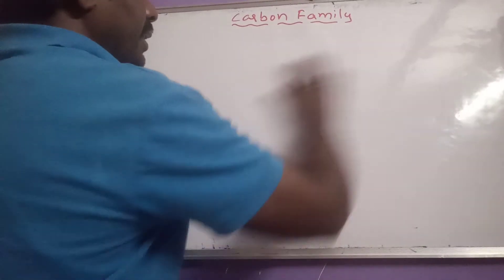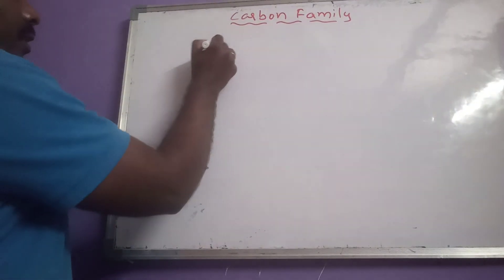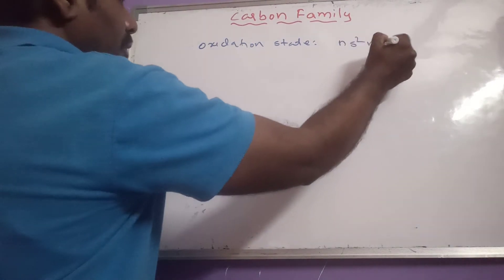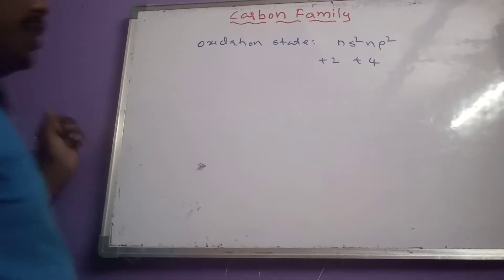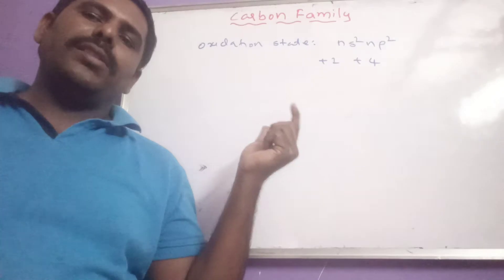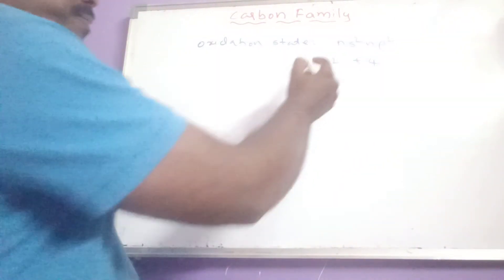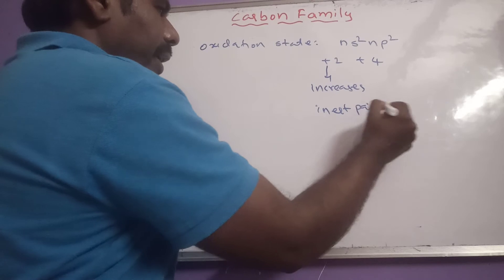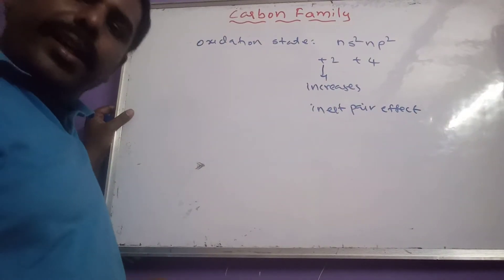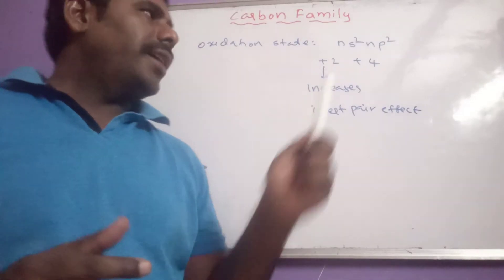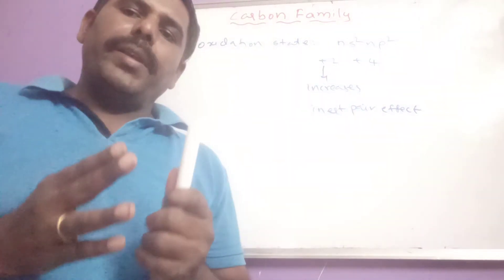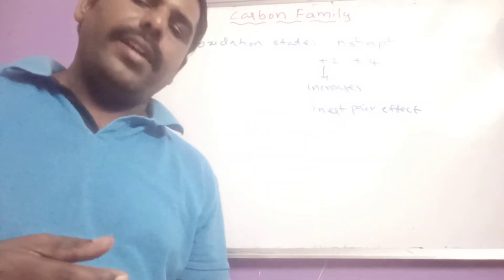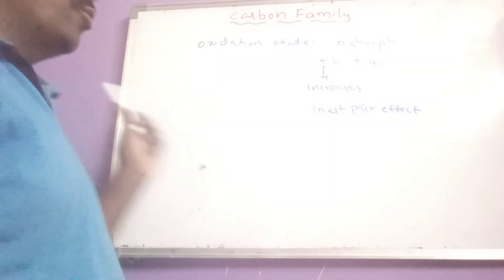Now let us see the oxidation states. Due to the general configuration NS2 NP2, the common oxidation states of 4th A group elements are +2 and +4. Due to the inert pair effect, +2 stability increases from top to bottom while +4 stability decreases. For lead, the +2 oxidation state is more stable than +4.